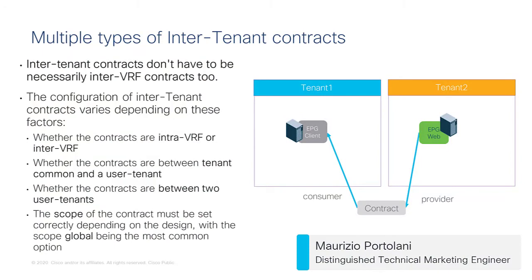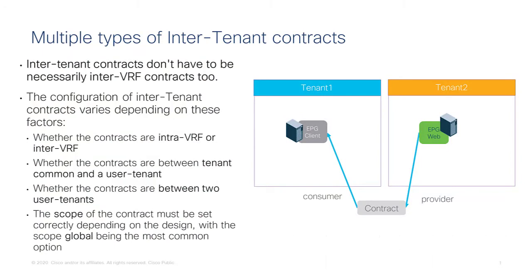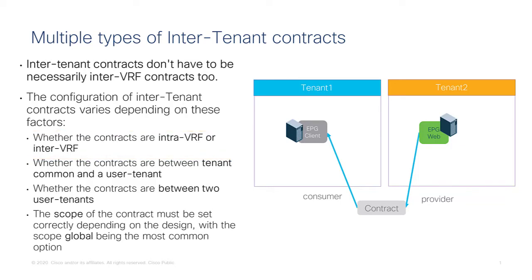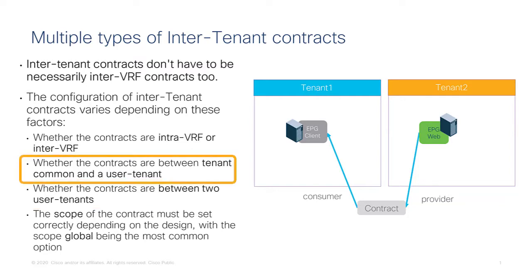Inter-tenant contracts are contracts between different tenants, as the name implies, but they come in different flavors. It could be that the EPGs are in the same VRF or in different VRFs. The tenants could be two normal user tenants or they could be tenant common and a regular tenant, and based on these different combinations there are slight variations to the configuration.